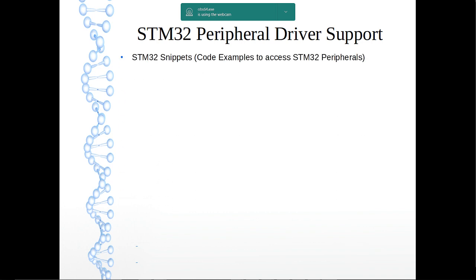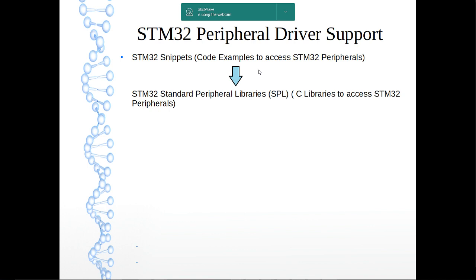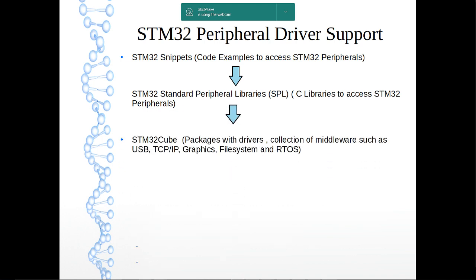You will see a similar analogy with other vendors as well. Earlier, silicon vendors used to provide code examples to access device peripheral and core registers. Similarly, ST also used to provide code examples, and later they provided standard peripheral libraries — C libraries — to access STM32 peripherals, supporting a number of microcontrollers.